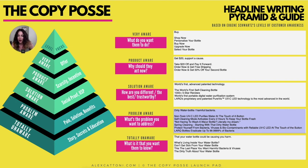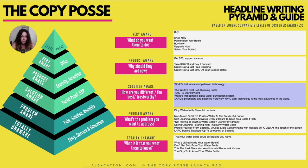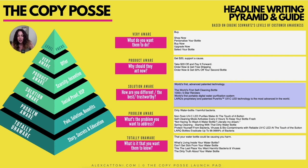Moving up to solution aware — 'How are you different, the best, and trustworthy?' — going off of Lark's copy, they're the world's first self-cleaning water bottle and have advanced patented technology, which is really the USP they want to play up. Headlines at this level include: 'The world's first self-cleaning bottle', '1,000-plus five-star reviews', 'The world's first portable digital water purification system', and 'Lark's proprietary and patented PureVis™ UVC LED technology is the most advanced in the world.' With this copy, they're really presenting themselves as the leader in the industry, utilizing social proof and USP to stand out.